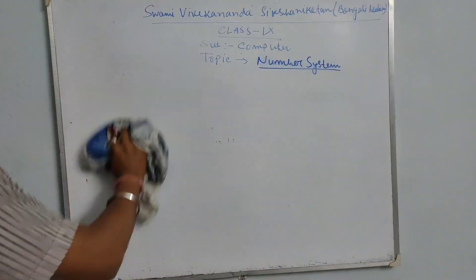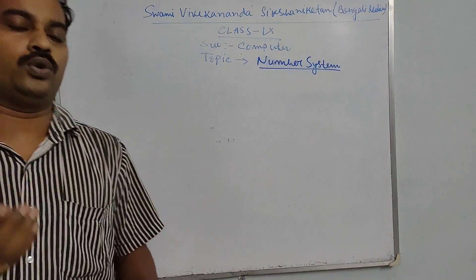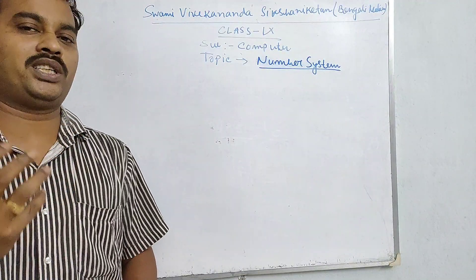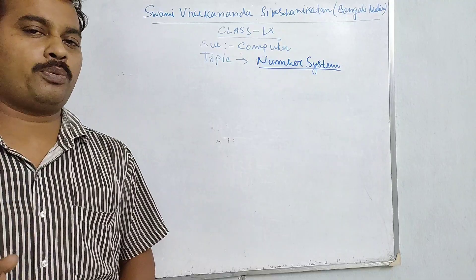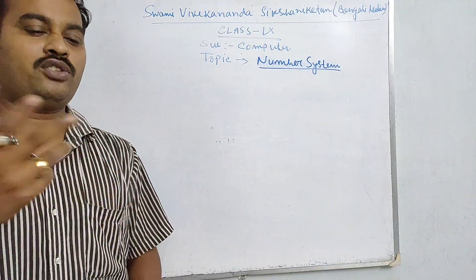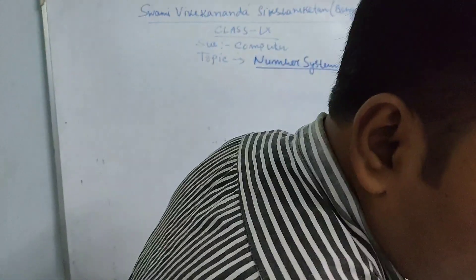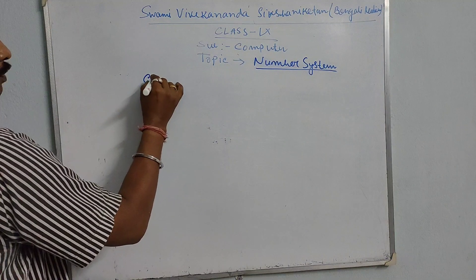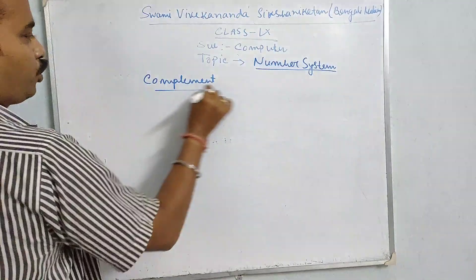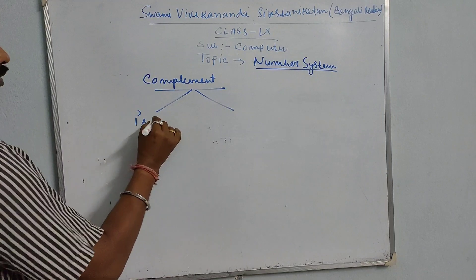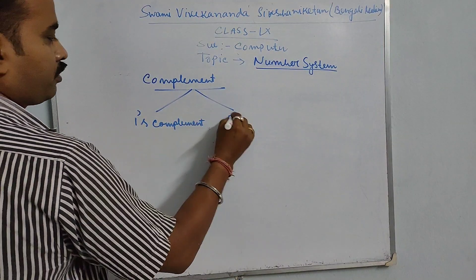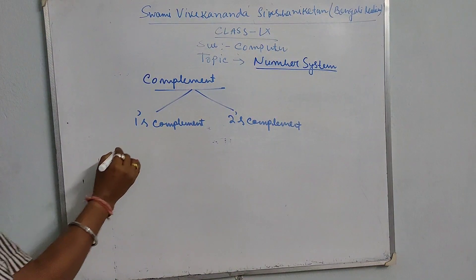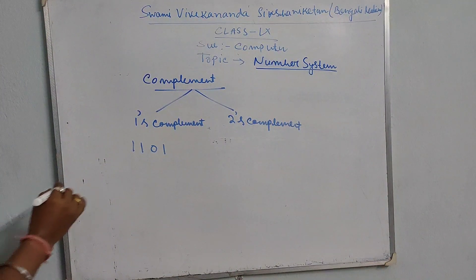The next problem is about complement — what is called complement in the number system. A binary number is either 0 or 1. The complement of 0 is 1, and the complement of 1 is 0. That is called the complement of a number — a very easy procedure. Today we discuss 1's complement and 2's complement.